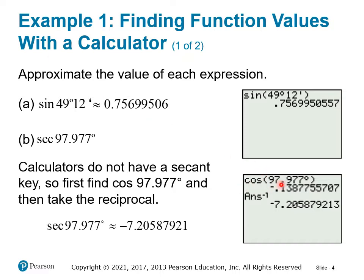So to summarize: take the cosine of that angle, then hit second and the negative button to recall the previous answer, then take the reciprocal using the x to the negative one key. When you're looking for secant, cosecant, or cotangent, always first find the reciprocal function — tangent, sine, or cosine — and then take the reciprocal with the x to the negative one button.